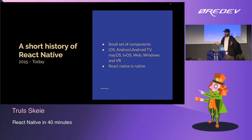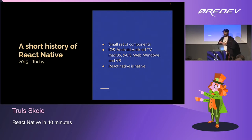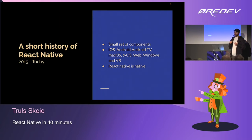Just to get it out of the way — React Native is native. All of the components the React Native team has created, like a view, a text, a button, a list, a text input — all of those are translated to native components on the native side. So a view is a UIView on iOS and an Android View on Android.